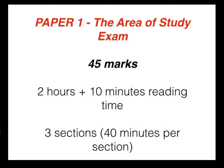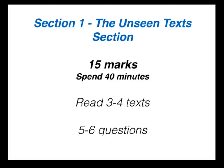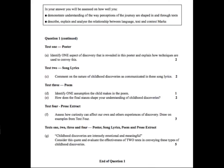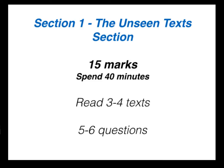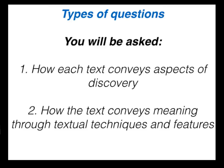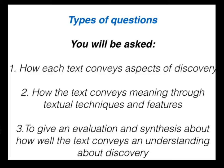In section one, called the unseen text section, it's worth 15 marks. You'll be asked to read approximately three to four small texts and answer about five to six questions that relate to three aspects: one, how each text conveys aspects of discovery; two, how the text conveys meaning through textual techniques and features; and three, an evaluation and synthesis of how well the text conveys an understanding of discovery.